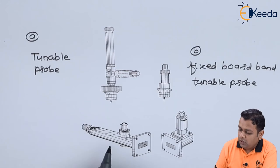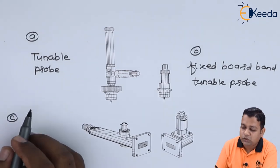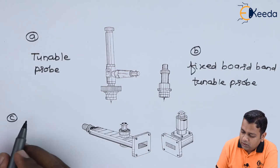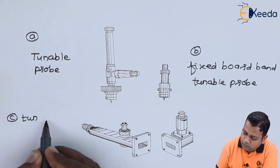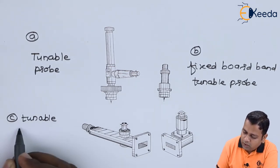Whereas we have part C of the figure. In part C of the figure you can see tunable waveguide detector.